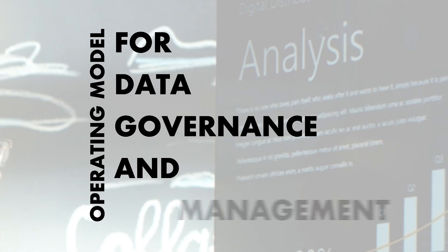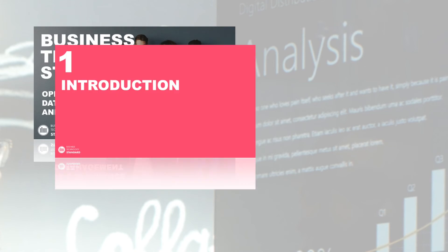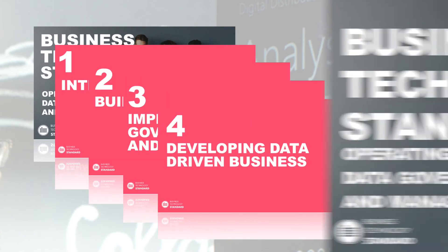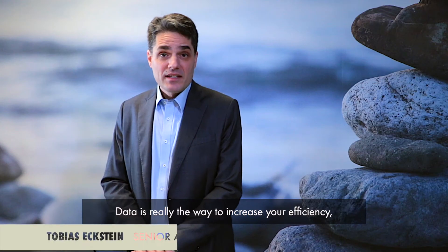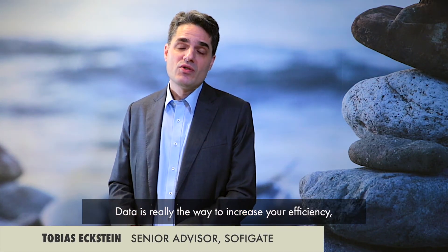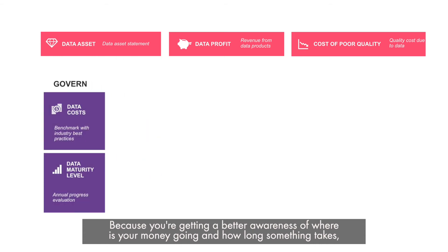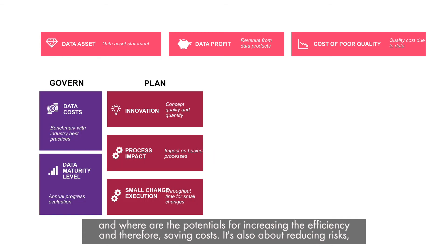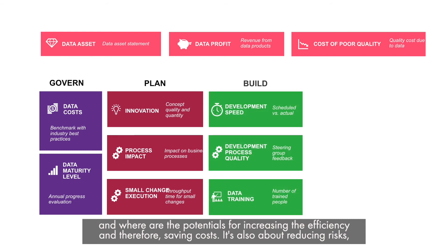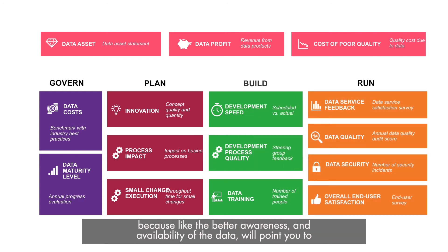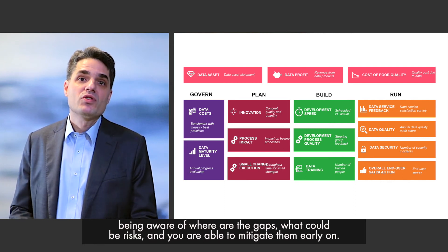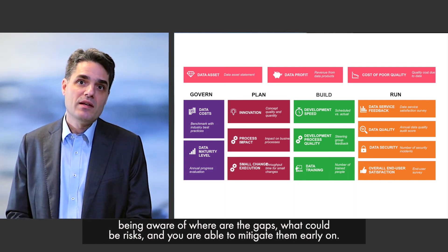Operating model for data governance and management. Data is really the way to increase your efficiency and reduce costs, because you get better awareness of where your money is going, how long something takes, and where the potentials for increasing efficiency and saving costs are. It's also about reducing risks, because better awareness and availability of data will point you to gaps, potential risks, and allow you to mitigate them early on.